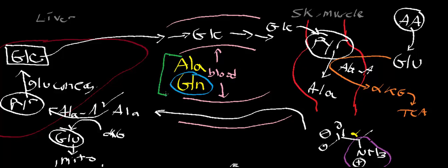To summarize: the two main ways we transport ammonia in the blood are attaching it to pyruvate to make alanine, or attaching it to glutamate to make glutamine. Keep in mind that the positions differ — in alanine, it's transported on the alpha carbon, while in glutamine, it's transported on the amide linkage on the R group. This video gave some intuition on how we transport ammonia in the blood.